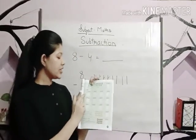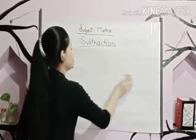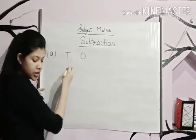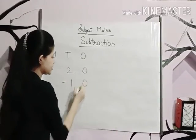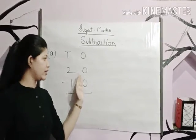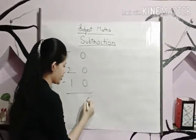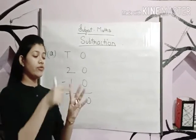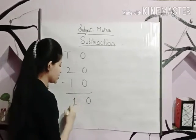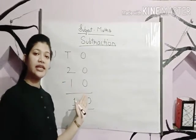Now let's come to the second part — subtract. Let's have a look. First one: twenty minus ten. We subtract the ones column first. Zero minus zero is equal to zero. Now two minus one — two lines, subtract one, one left. So twenty minus ten is equal to ten.